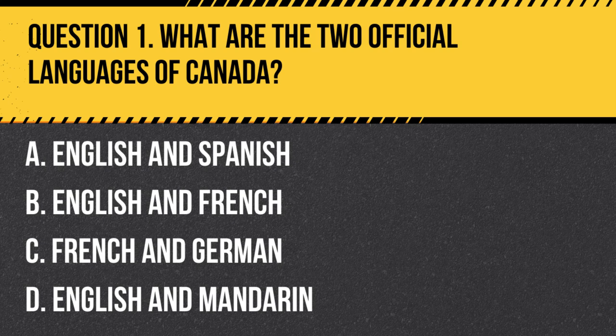Question 1. What are the two official languages of Canada? A. English and Spanish. B. English and French. C. French and German. D. English and Mandarin.